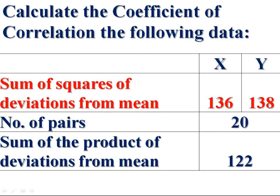We are given the sum of squares of deviations from mean. The deviations are represented by small letters x and y. Squaring these gives x square and y square. Taking the sum is represented as sigma x square and sigma y square.